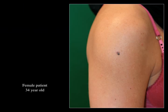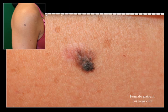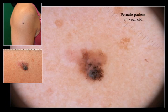Case number three. It's a 34 year old female patient. She has this spot on her arm for at least one year. It's changing a little recently but the lesion is very small — less than 6 mm in diameter. And this is dermoscopy. Again you have a few seconds to think about it.